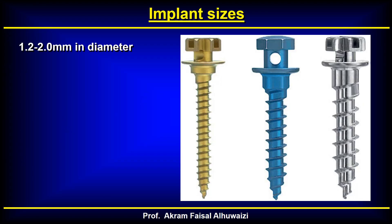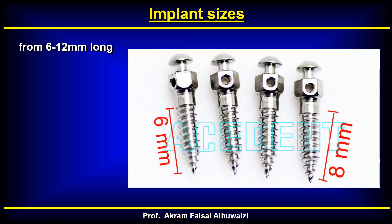The diameter of TADs generally ranges from 1.2 to 2 millimeters. Narrower ones may break during insertion or removal, while wider ones may hit neighboring teeth. Staying within the medium range of 1.4 to 1.6 millimeters is probably a better choice. They also come in a variety of lengths — as stated, the length refers to the body only — ranging from 6 to 12 millimeters, with 8 to 10 millimeters being most common.